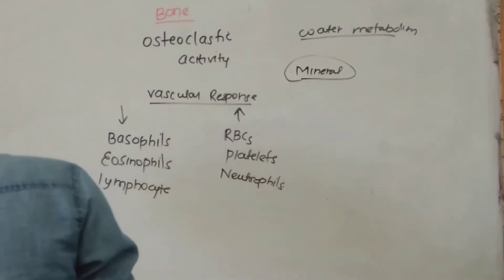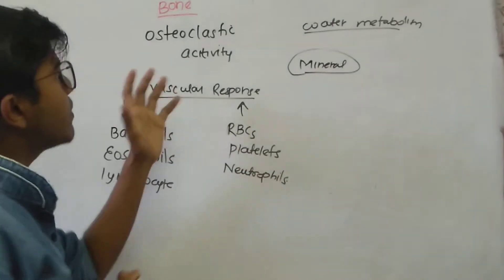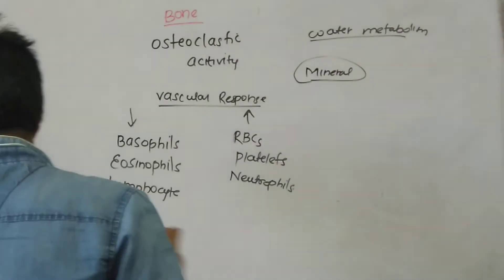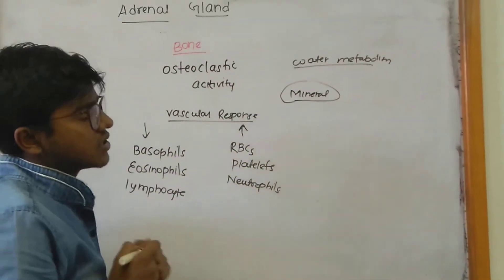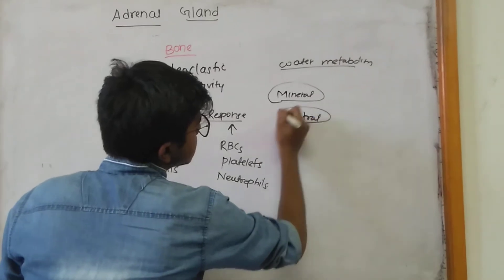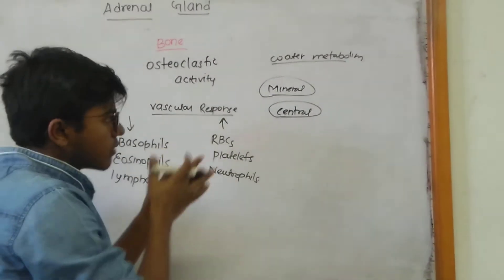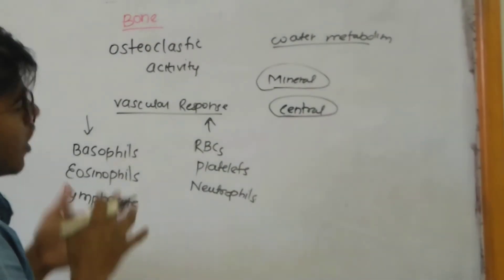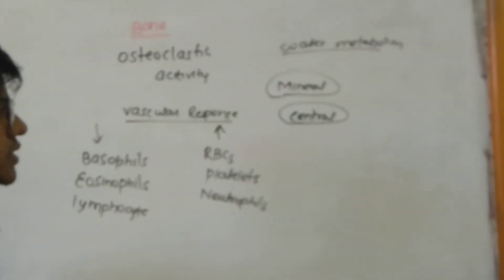As we know, glucocorticoids cause the breakdown of muscle proteins. In hypersecretion of glucocorticoids, severe muscle weakness and muscle wasting can occur. On the central nervous system, glucocorticoids have a permissive action — they are needed for the proper functioning of the nervous system. Hyposecretion of glucocorticoids may lead to irritability and mental disability.